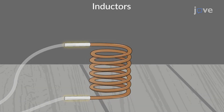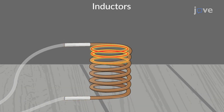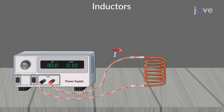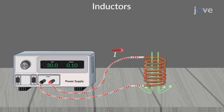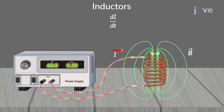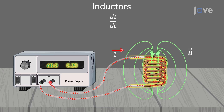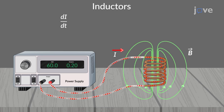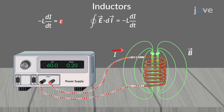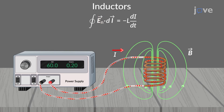An inductor is a two-terminal circuit element consisting of coils of wire. Because of the current flowing in the circuit, magnetic flux passes through the inductor. When there is a change in the current passing through the inductor, according to Faraday's law, a back EMF is generated.